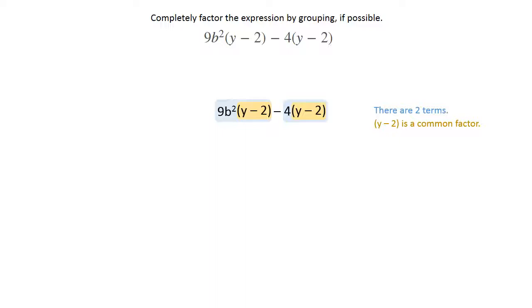You're going to be taking that y minus 2 out and putting it in front, and then all you have to do is throw a set of parentheses around what you have left. So you've got the y minus 2 in the front, and what you have left is 9b squared minus 4.